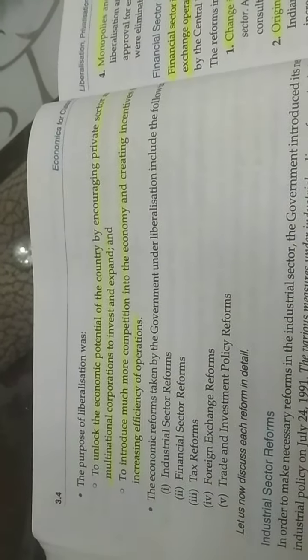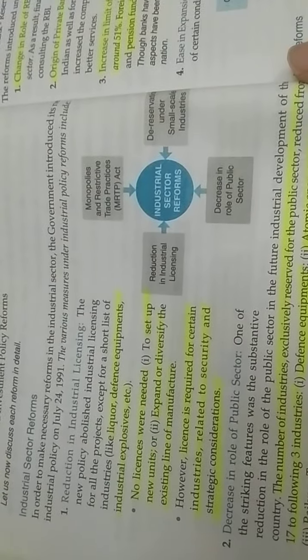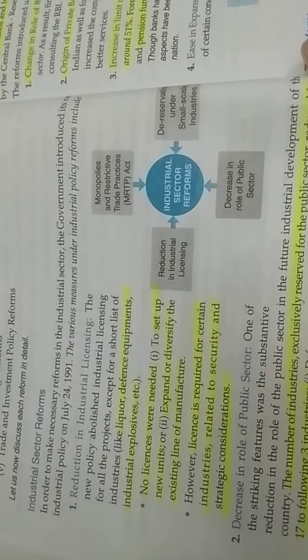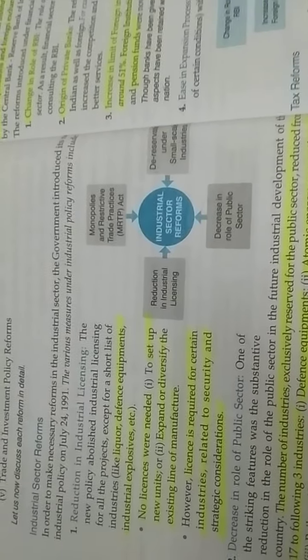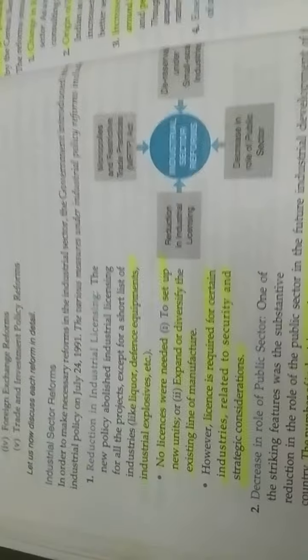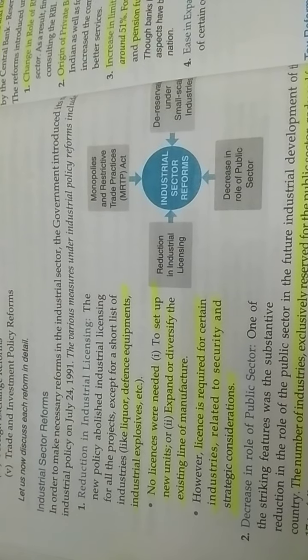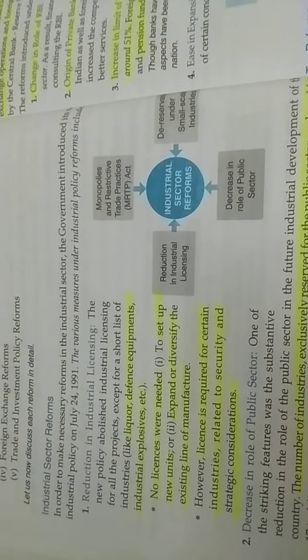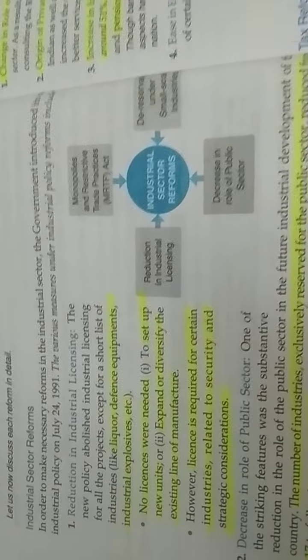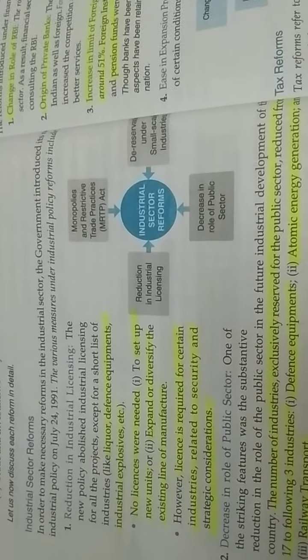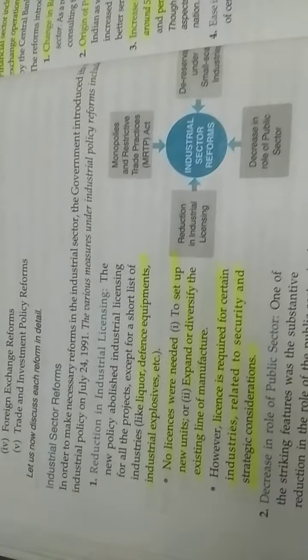Under liberalization, there are various types of reforms. First is industrial sector reforms. The first reform is reduction of industrial licensing. Prior to 1990, all private organizations or private firms had to take a license from the government before starting the business. But under this policy, through liberalization, the government removed the licensing requirement. Only a few select businesses were required to continue with the licensing policy; otherwise, rest of the businesses were free from the licensing policy.